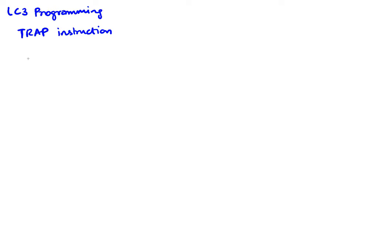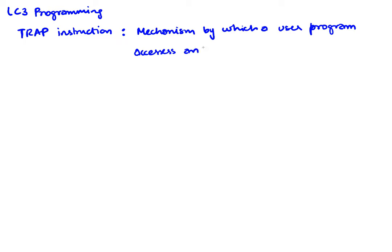So first, what is the TRAP instruction? The TRAP instruction is a mechanism by which a user program accesses a system service. We can think of the system as something as simple as just a bunch of code, or you can also think of this as the operating system.